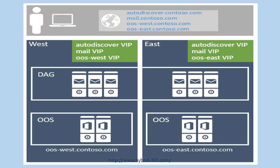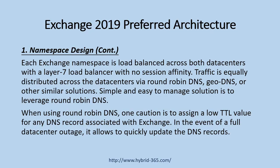Each Exchange namespace is load balanced across both data centers with a layer 7 load balancer with no session affinity. Traffic is equally distributed across the data centers via round-robin DNS, GeoDNS, or other similar solutions.